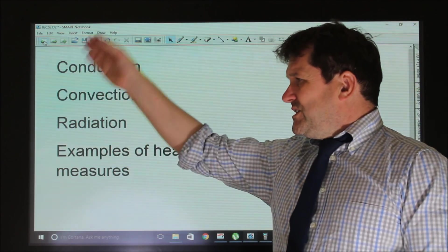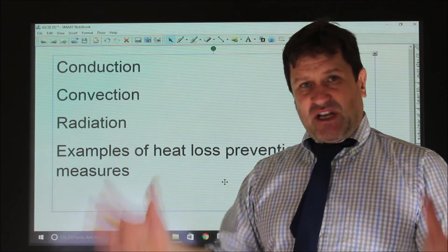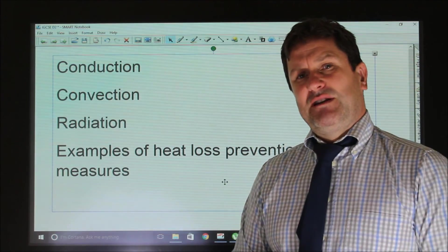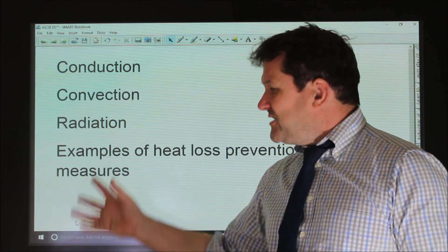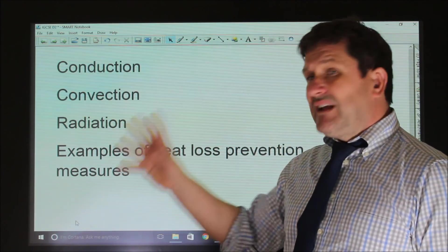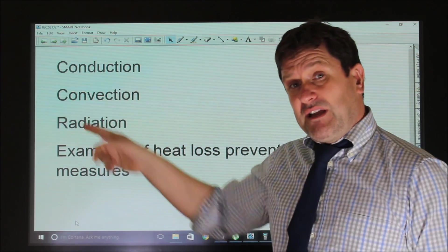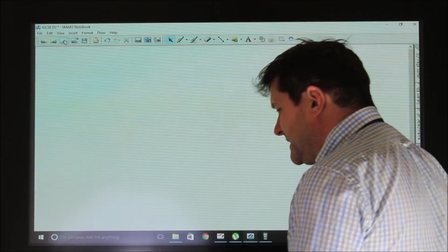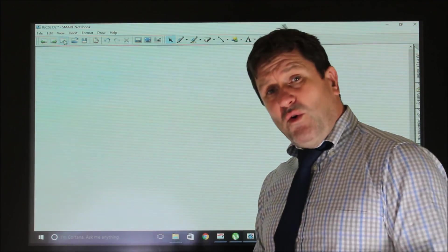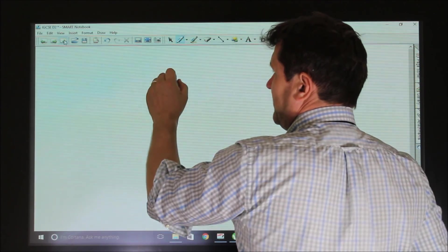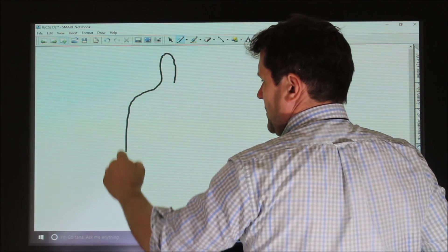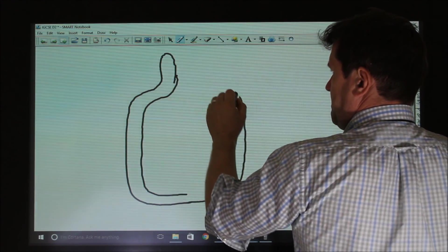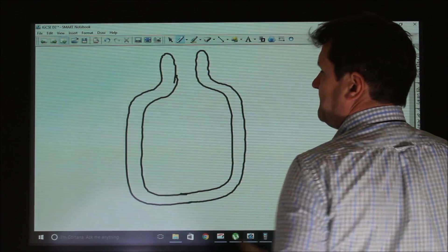Questions on conduction, convection, radiation will be typically around a context. It might be loft insulation or a vacuum flask. But in any given situation, you've got to think about how is the measure preventing heat loss by addressing conduction, convection and radiation. If you think about a famous example such as a vacuum flask, loft insulation and building insulation, it's all the same principle.